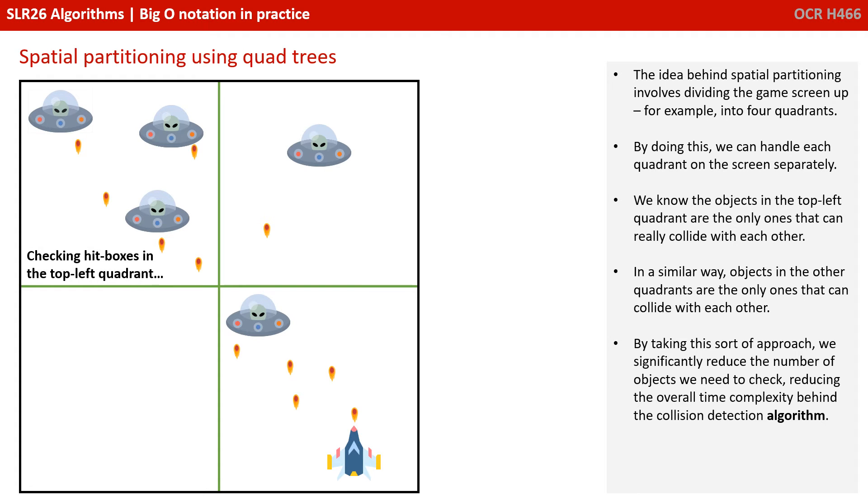The idea behind spatial partitioning involves dividing the game screen up, for example, into four quadrants. By doing this, we can handle each quadrant on the screen separately. We know the objects in the top left quadrant are the only ones that can really collide with each other. In a similar way, objects in the other quadrants are the only ones that can collide with each other.